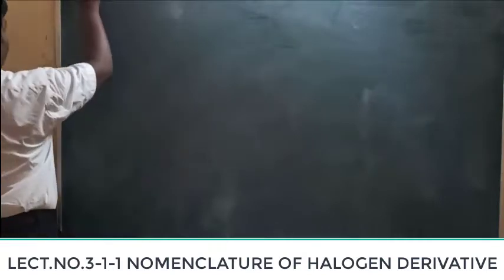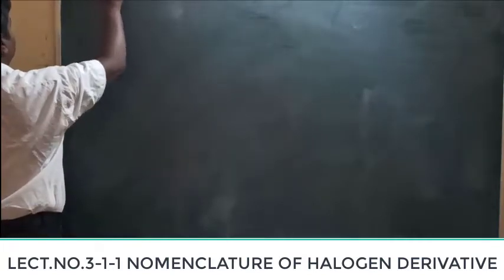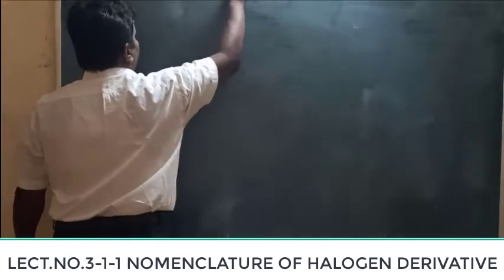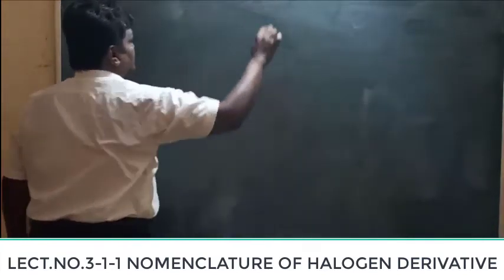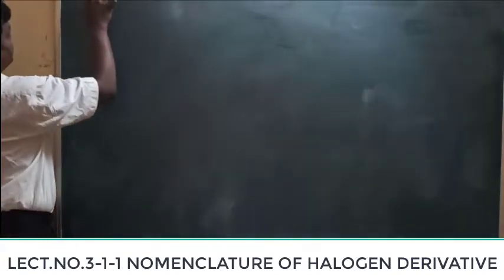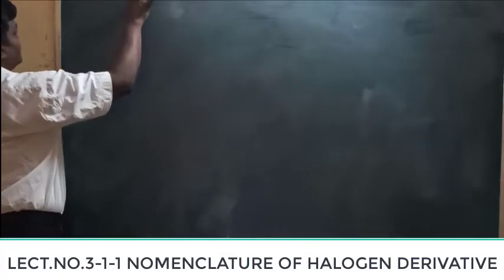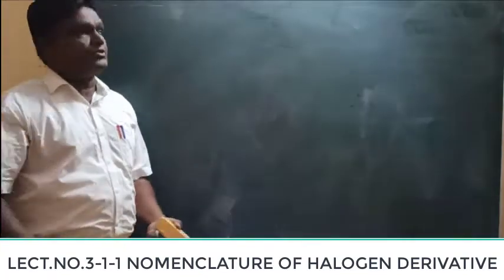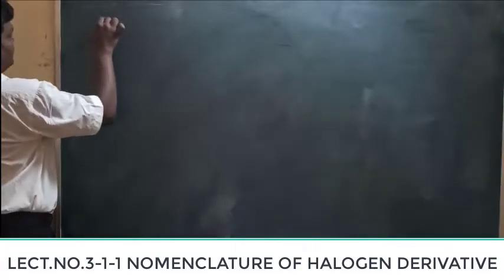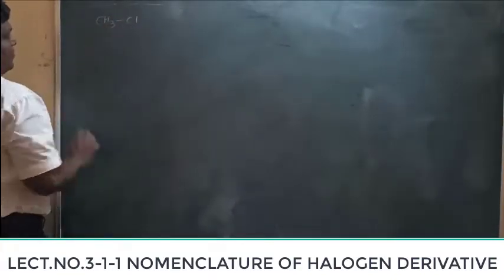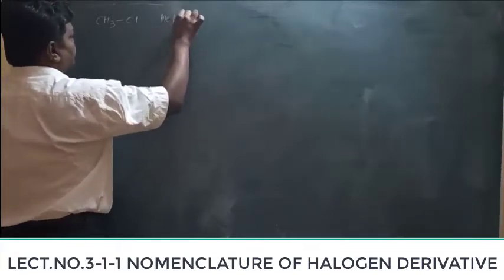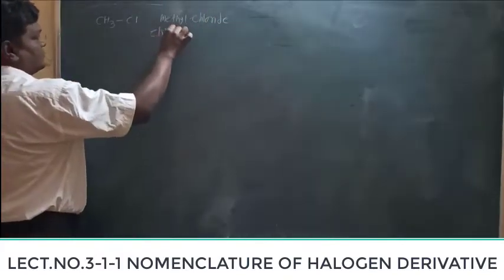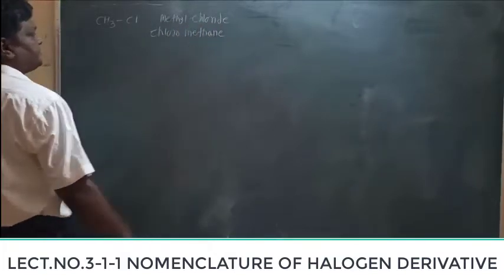Let's start with the nomenclature of haloalkanes. For the first example, the common name is methyl chloride. If you write the IUPAC name of this, it is chloromethane.